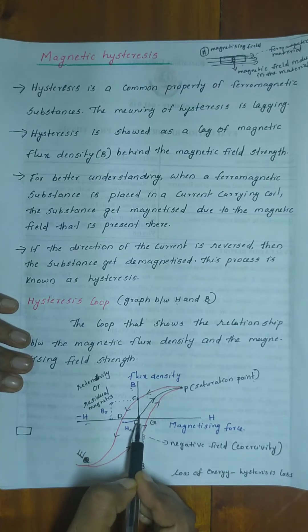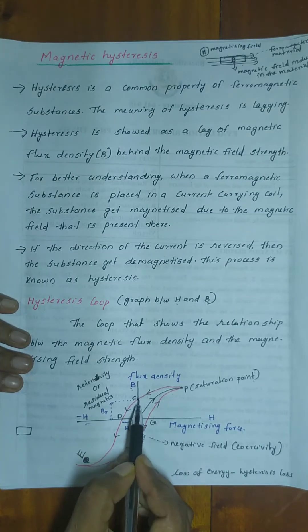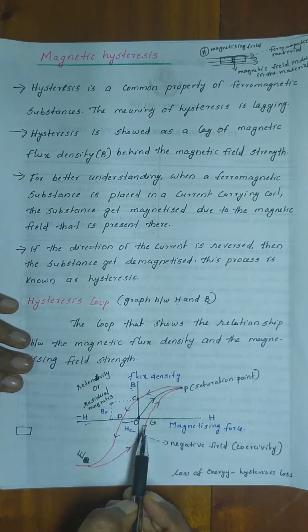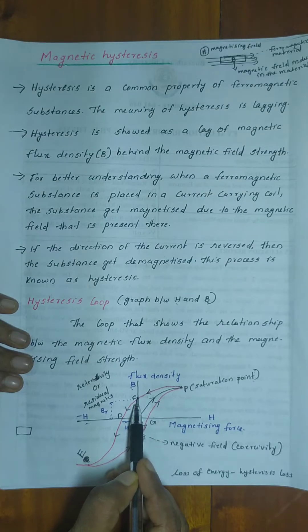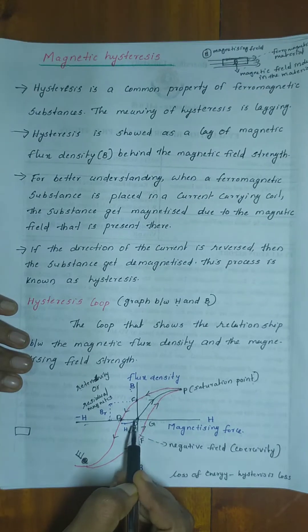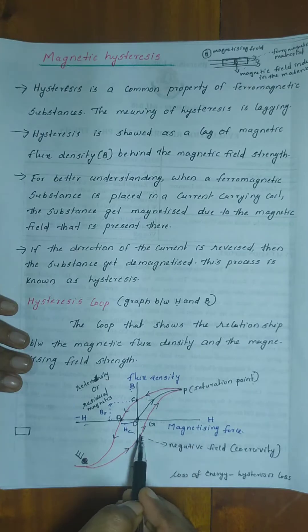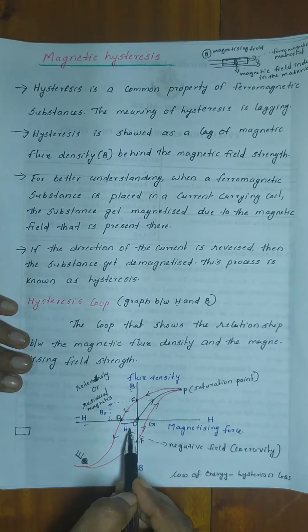We can see the retentivity on our graph. When the magnetizing force is reduced to zero, a residual flux density remains. Looking further at the graph, when the flux density is brought to zero, we examine the coercivity.